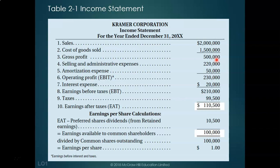Next are selling and administrative expenses. Selling expenses include items like salesman commissions and advertising costs. Administrative expenses include running the office. We also have amortization, which is essentially depreciation. When we subtract these from gross profit, we get what is known as operating profit, or earnings before interest and taxes (EBIT).